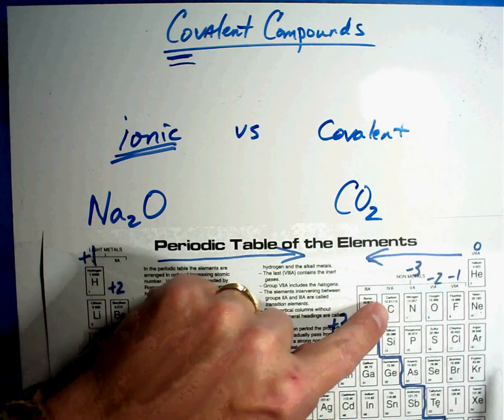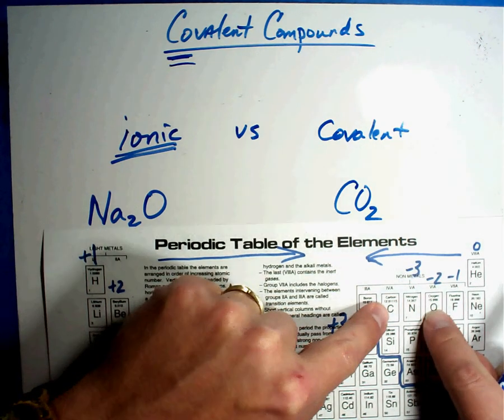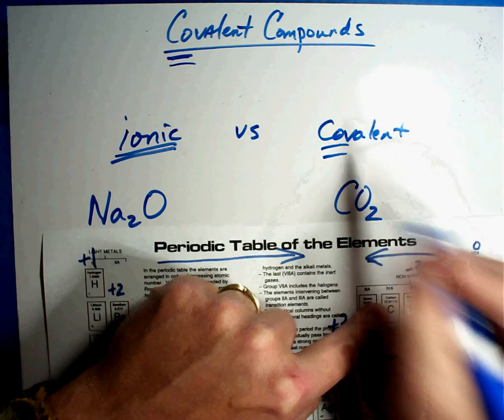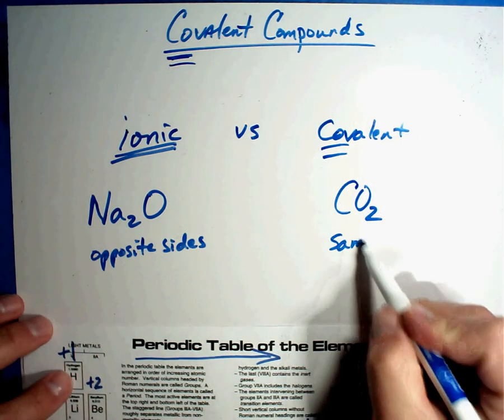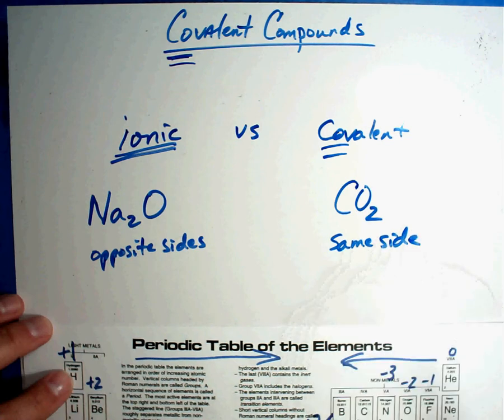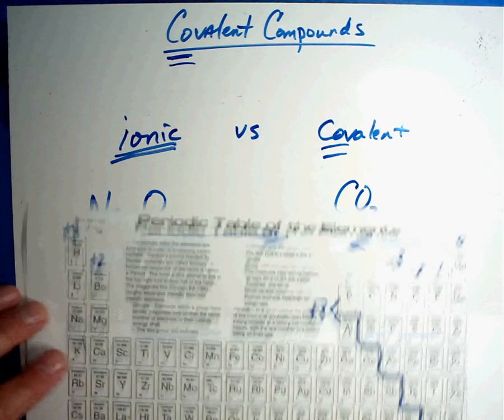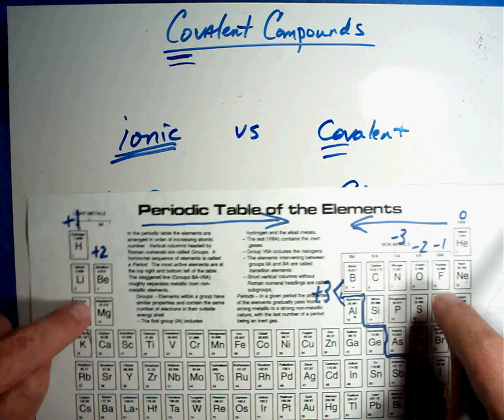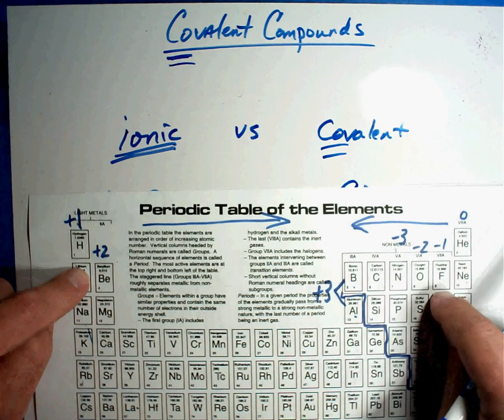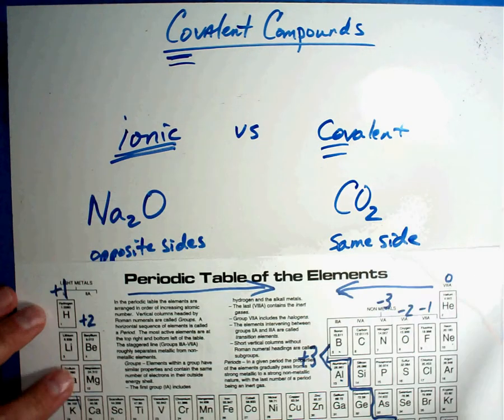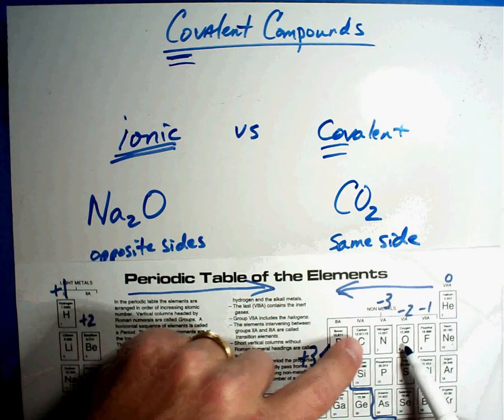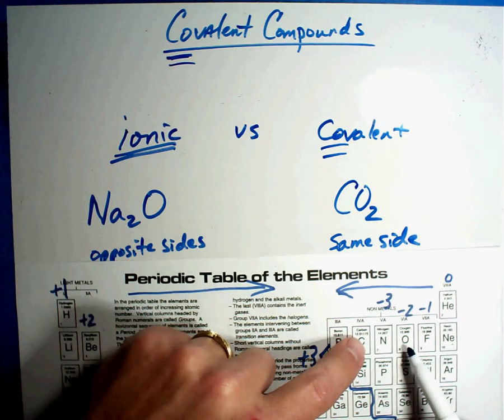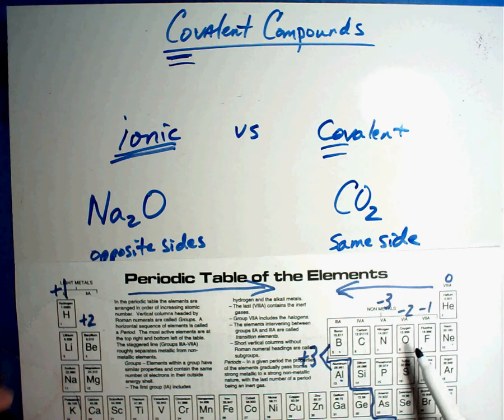Let's go ahead and write that in. Opposite sides. Carbon, pointing. Oxygen, pointing. If they're on the same side, then they're covalent. Why would that be true? Well, opposite sides are pluses and minuses. Plus, minus, plus, minus, plus, minus. They're magnets. But when they're on the same side, they're going to have to do something else to attach. So they're going to have to plug into each other like Legos.